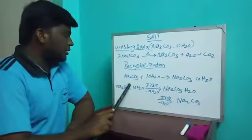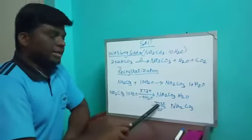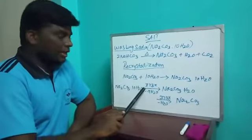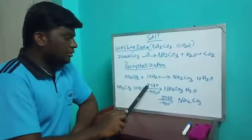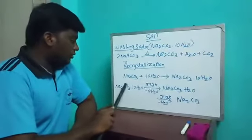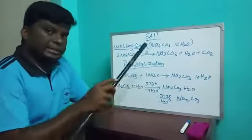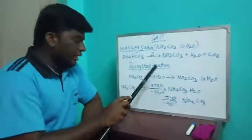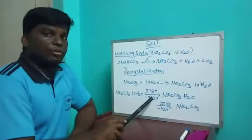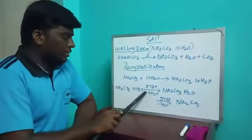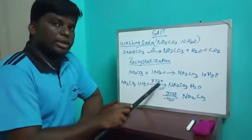Now washing soda is crystallized. Sodium carbonate with 10 molecules of water is heated at 373 Kelvin. It will evaporate. How many molecules evaporate? Nine. So 9 molecules of water will evaporate.